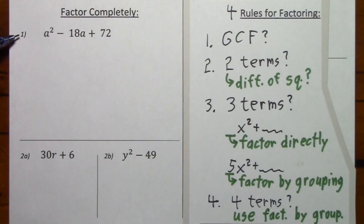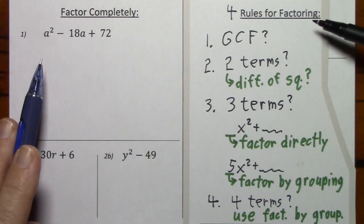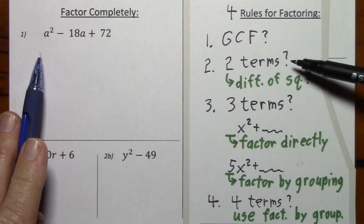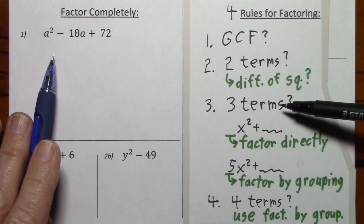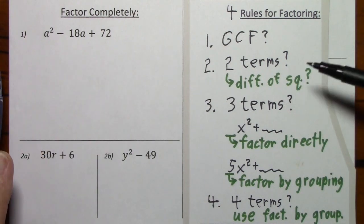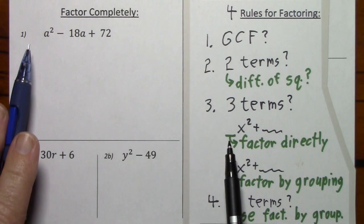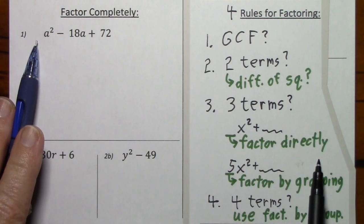Looking at number one and using the rules for factoring: do we have a GCF? No. Do we have a total of two terms? No. Do we have a total of three terms? Yes. Is the leading coefficient a one? Yes. So we can factor directly.